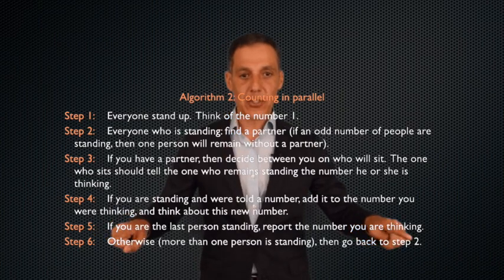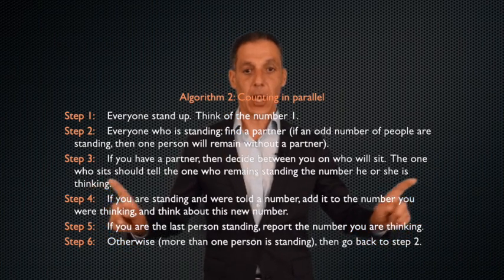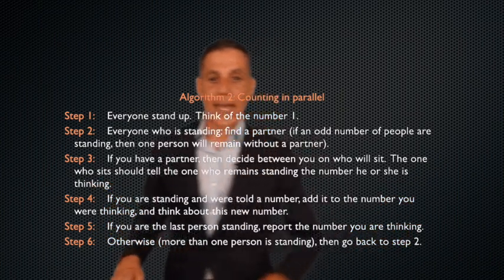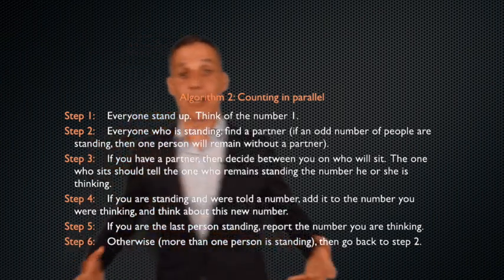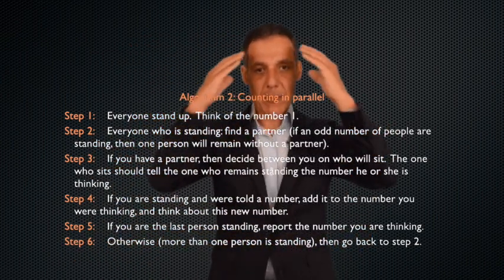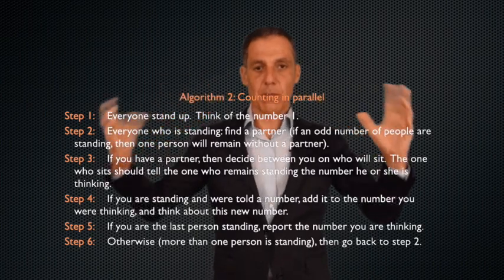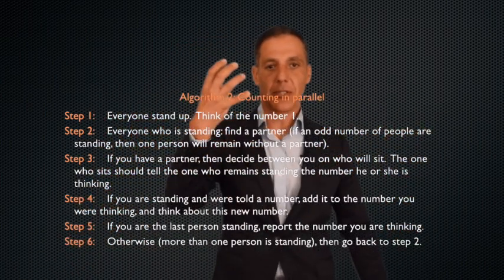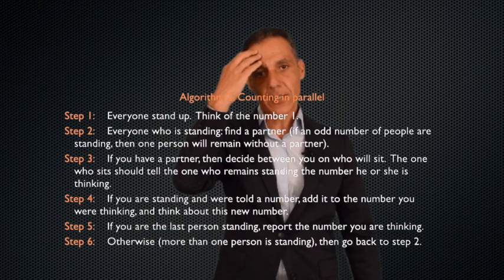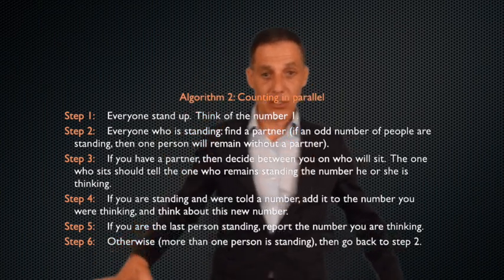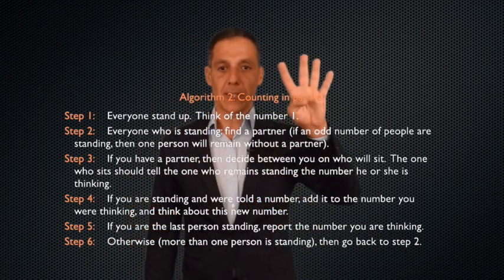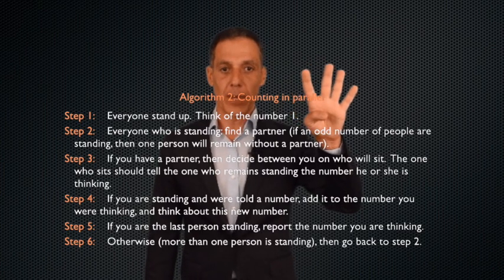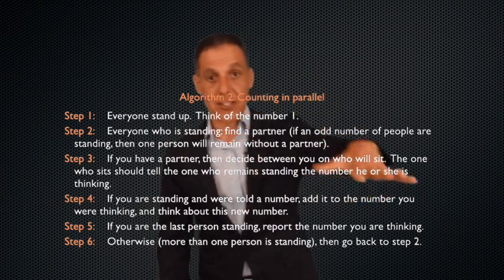Now, step five. If you're the last person standing, report that number that you're thinking. Otherwise, go back to step two. So now we've got 50 people standing. Everybody's got the number two in their head. What do we do? Pair off. Half the people sit down. They pass two back to the person standing up. What number do they have in their head? Four. So now I've got 25 people with four in their heads. What's 25 times four? 100. That's the count.